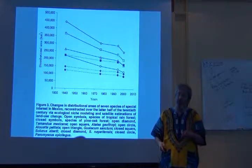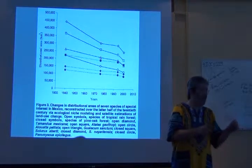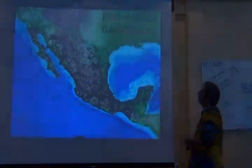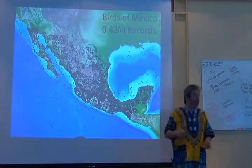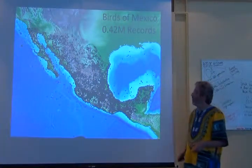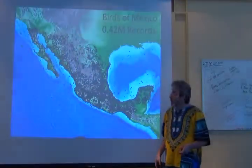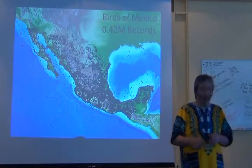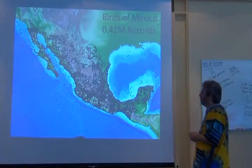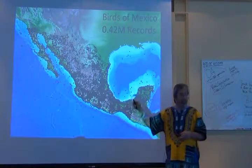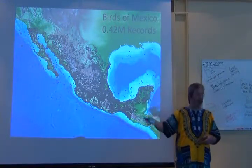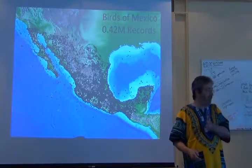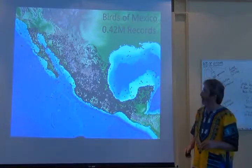The neat thing is we're down below the national level. We can go pixel by pixel across a country because we have a nice density of records. These are specimen records that are relatively old — the bulk of the specimen record was accumulated before 1960.